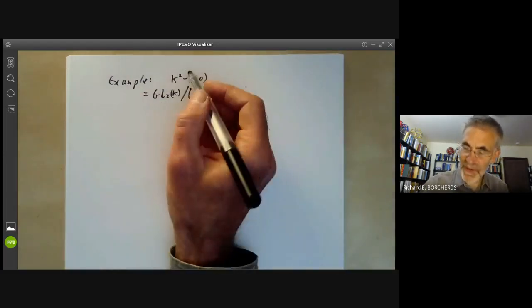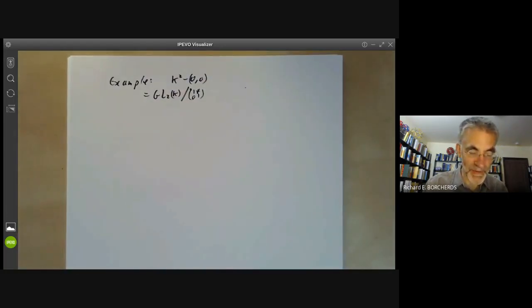So it's actually an example of something called a quasi-affine variety, an open subset of an affine variety.